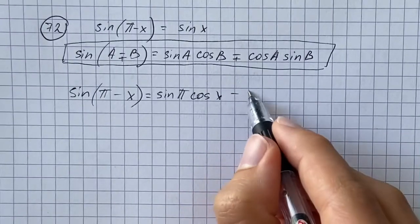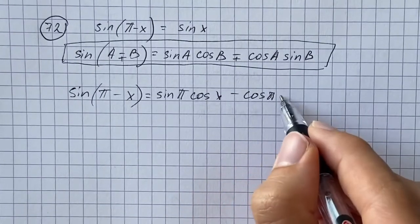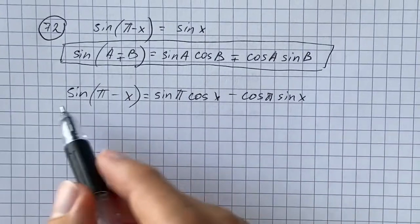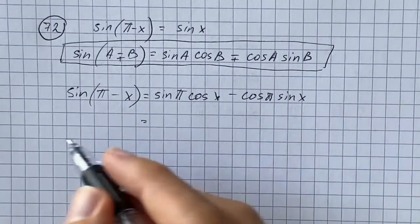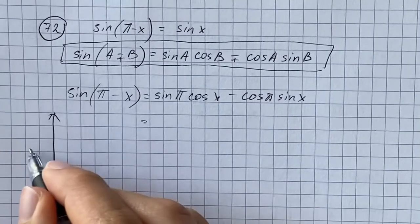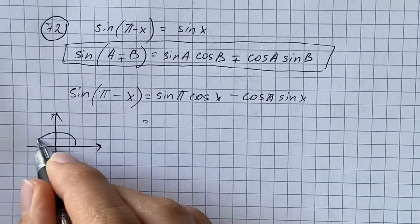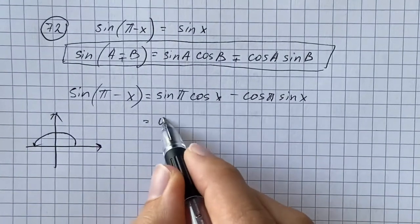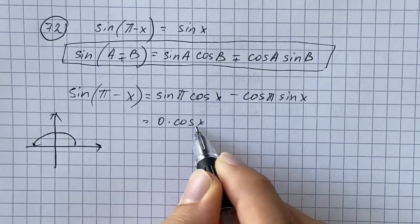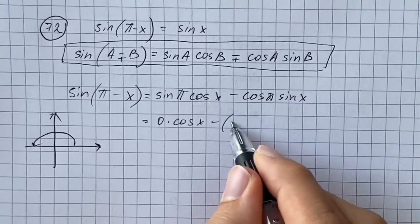In terms of the unit circle, we get that sine of pi equals zero and cosine of pi equals negative one.